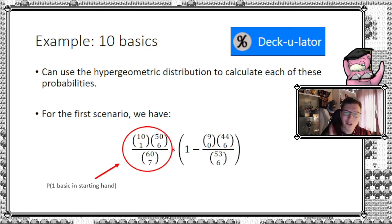And before I get any further, check this Deck-u-lator out there. I'll leave the link in the description below, but it can help you do this for yourself. So on the left, like I said, the probability of starting with one basic in your hand. On the right side we see the probability of having at least one basic in your prize cards. But if you look a little closer, you may notice something a little off here. I say one minus something.